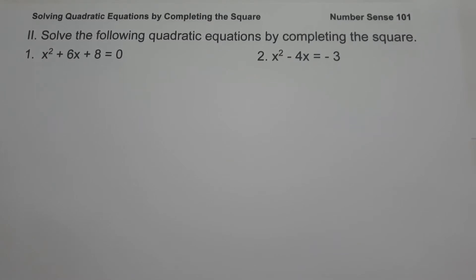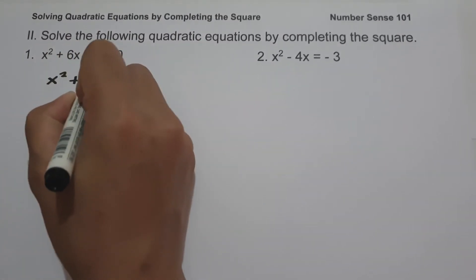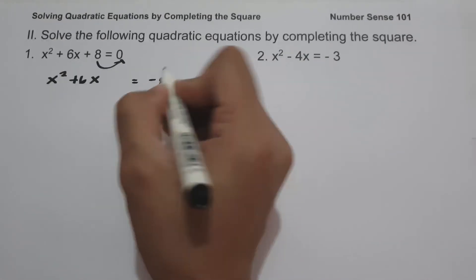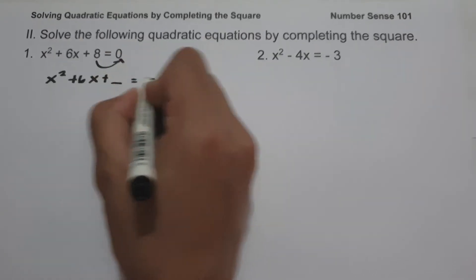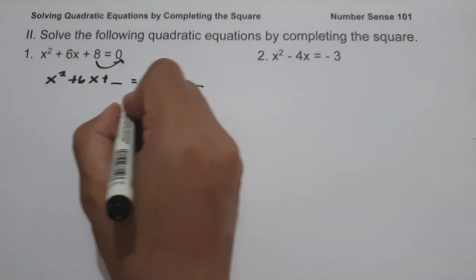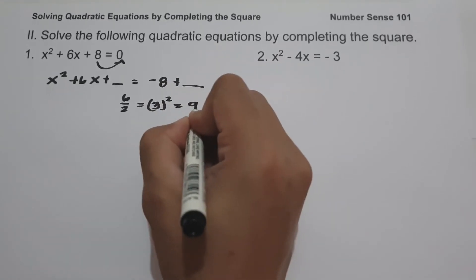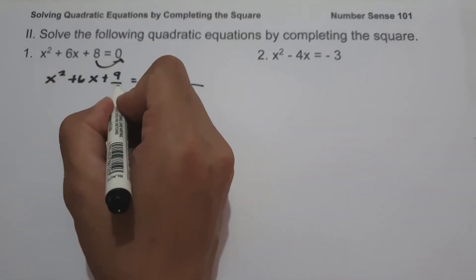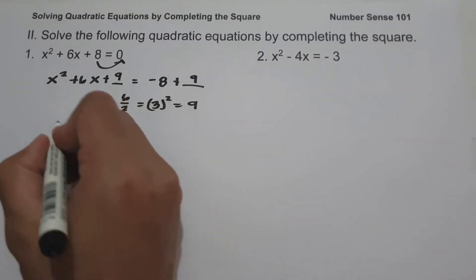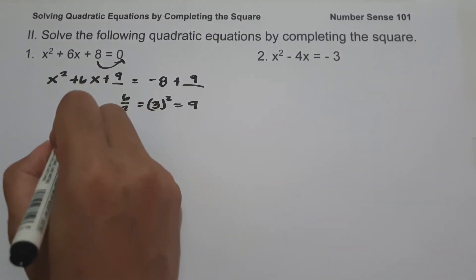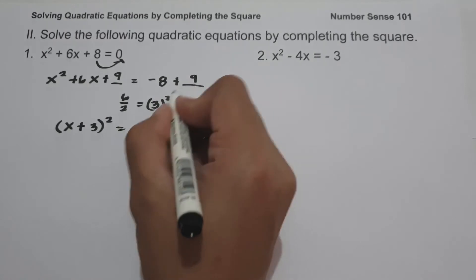The first thing we're going to do is move the constant 8 to the other side, giving x squared plus 6x equals negative 8. We're going to make this a perfect square trinomial by adding a number to both sides. Since the middle term is 6, we have 6 divided by 2 equals 3, and 3 squared is 9. So 9 must be added to both sides. After factoring: x plus 3, quantity squared, equals negative 8 plus 9, which is 1.